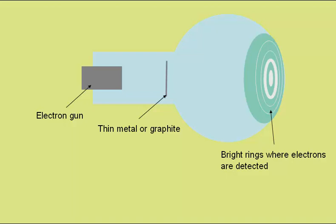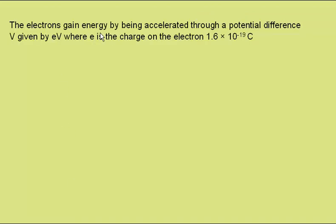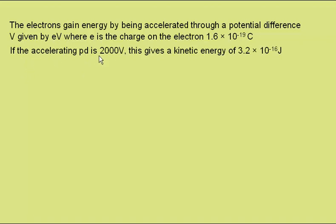Now to calculate their de Broglie wavelength. The electrons gain energy by being accelerated through a potential difference, or voltage V. The energy gained is given by eV, where e is the charge on the electron, 1.6 × 10⁻¹⁹ coulombs. Electrons actually have a negative charge, but the energy clearly cannot be negative. If the accelerating potential difference is, say, 2,000 volts, the electrons will gain a kinetic energy of 3.2 × 10⁻¹⁶ joules.